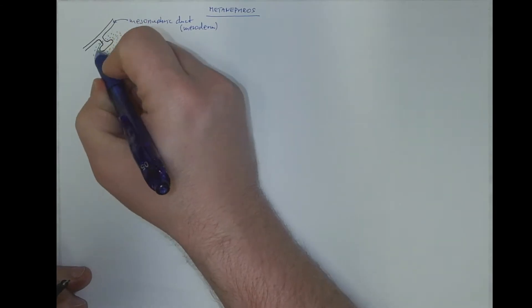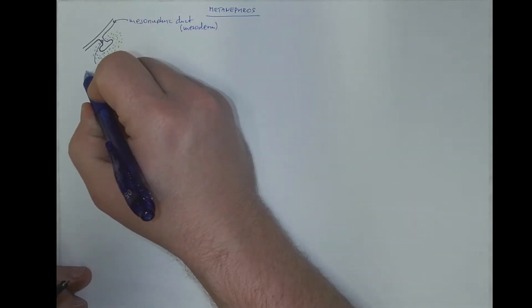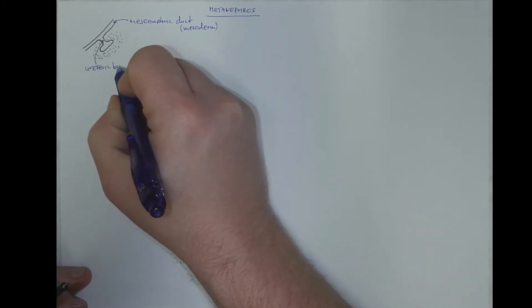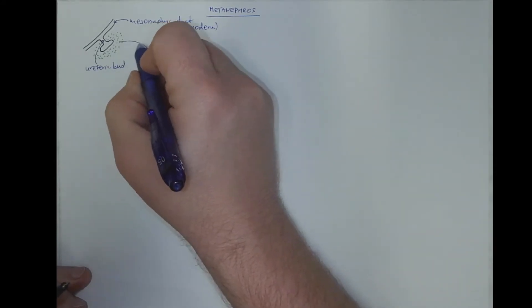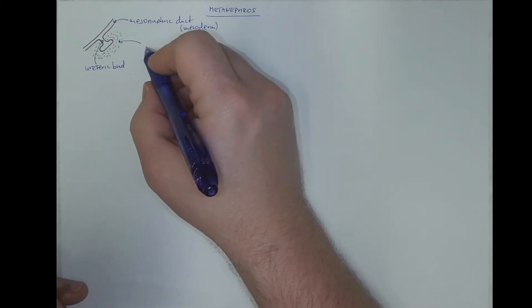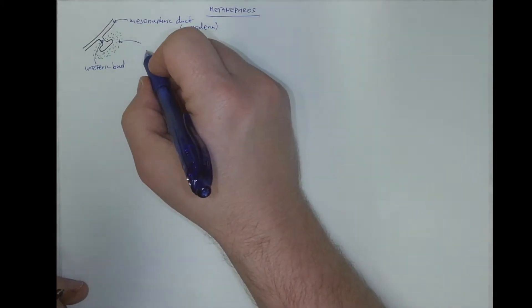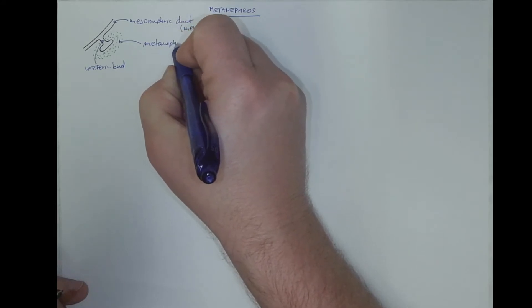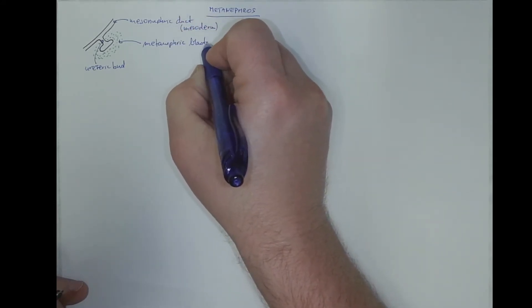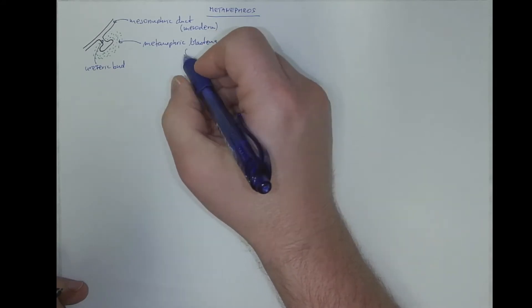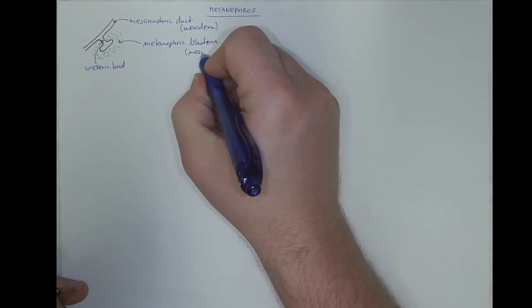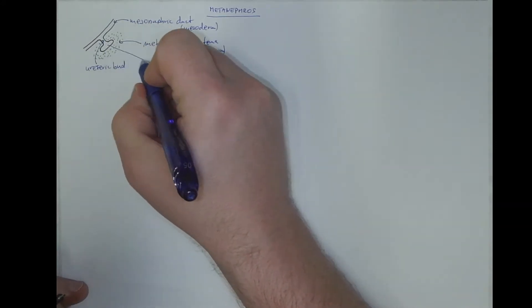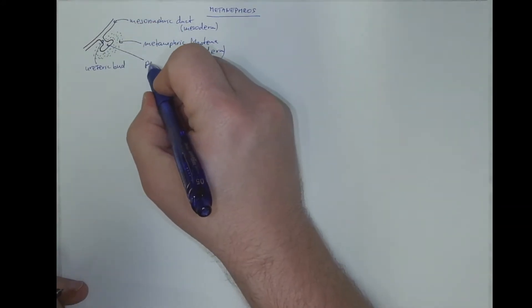Its branch called the ureteric bud and the population of the metanephric blastema, which also comes from the mesoderm. This is the future pelvis of the kidney.